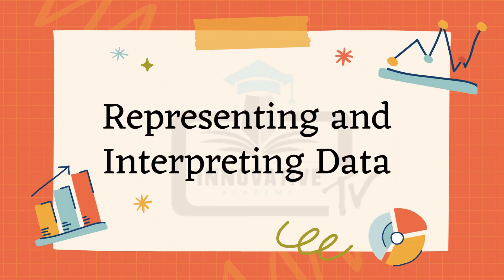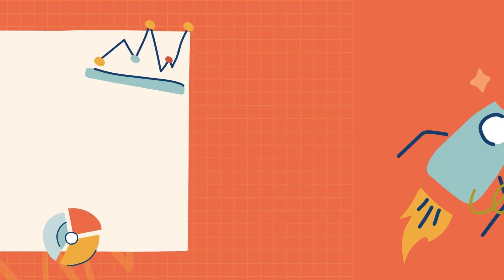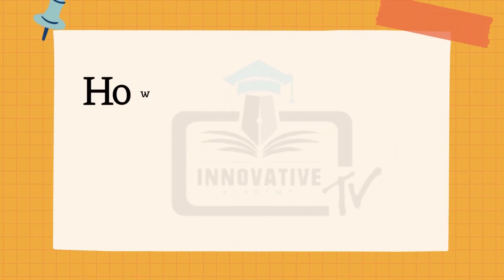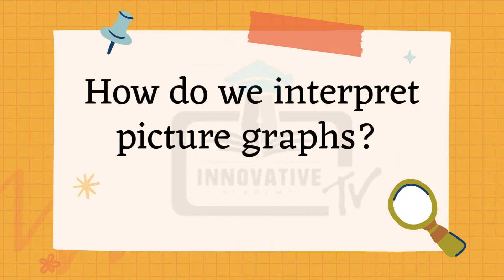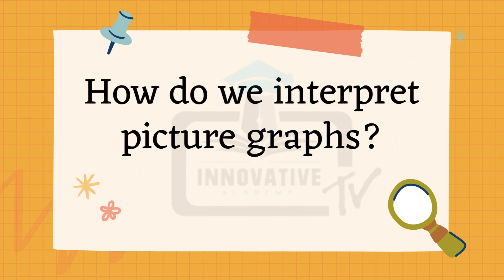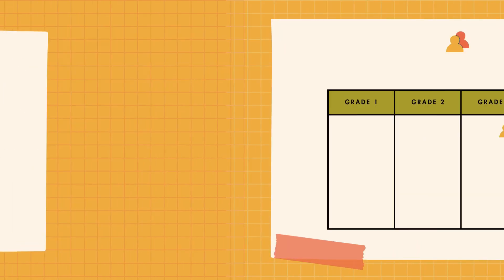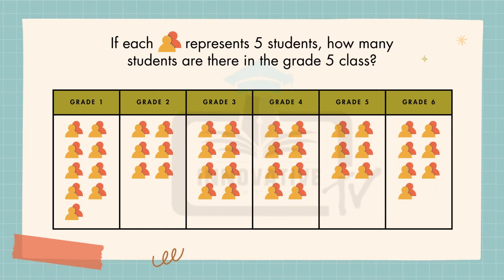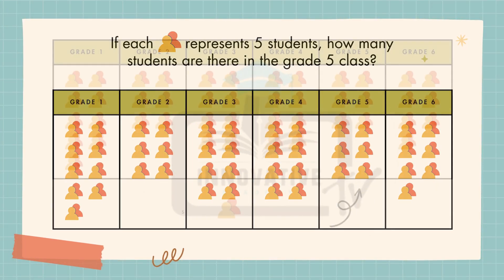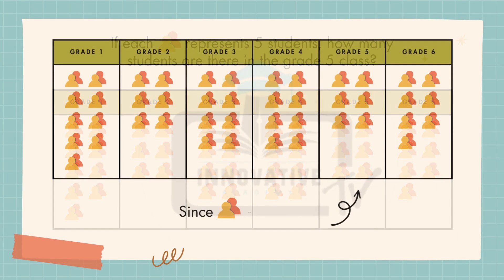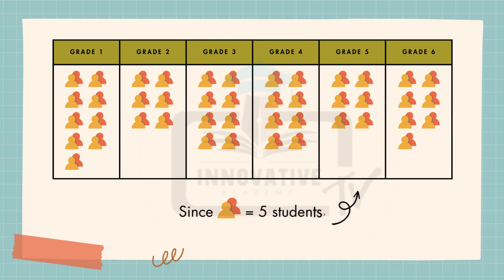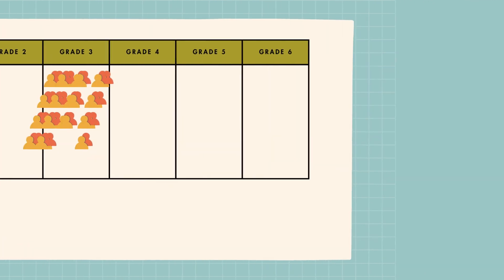Let's study representing and interpreting data. How do we interpret picture graphs? Recall, picture graphs use images to represent information. If each image represents 5 students, how many students are there in the grade 5 class? Since one image equals 5 students, 6 times 5 is equal to 30.